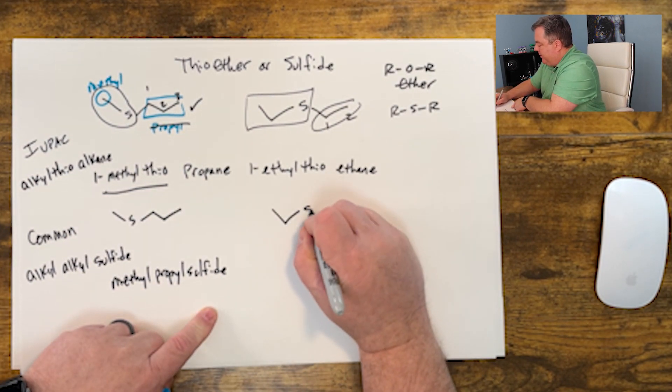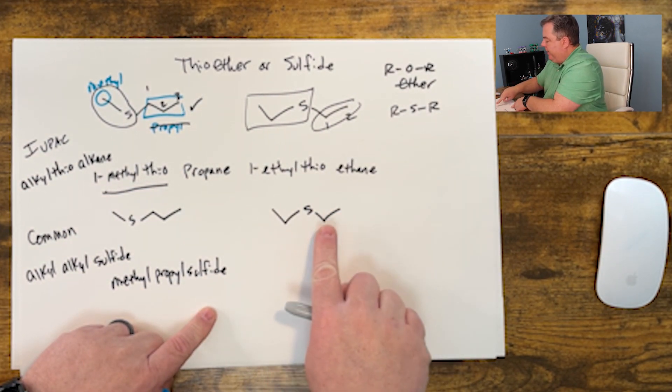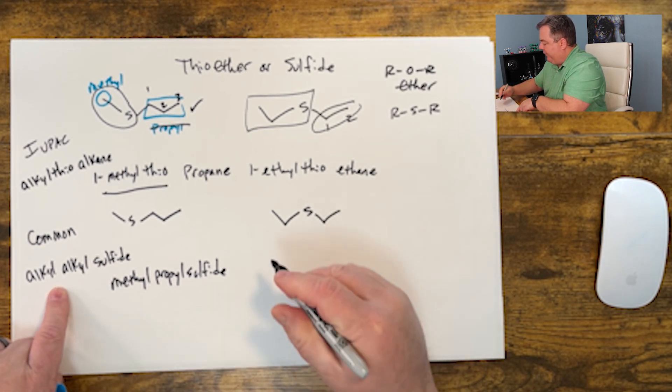This one, let me redraw it, is an ethyl and an ethyl. So instead of writing ethyl twice, and since there's two of them, we just say diethyl sulfide.